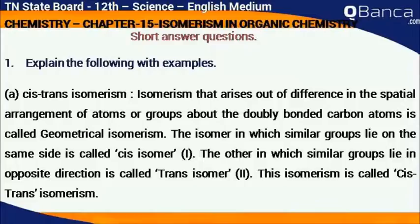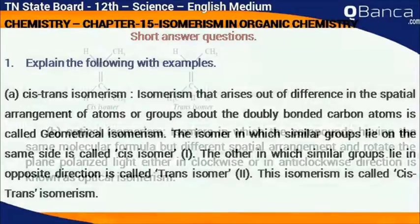The isomerism in which similar groups lie on the same side is called cis isomer. The other, in which similar groups lie in opposite direction, is called trans isomer. This isomerism is called cis-trans isomerism.